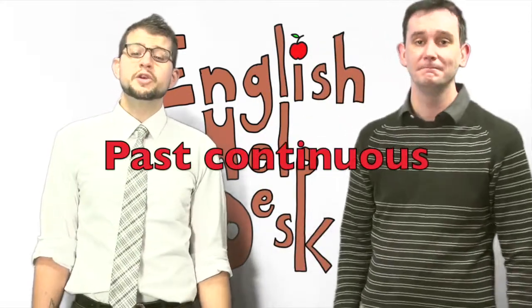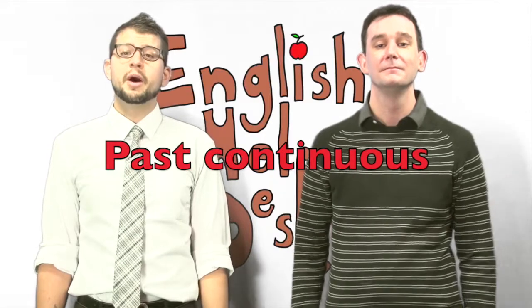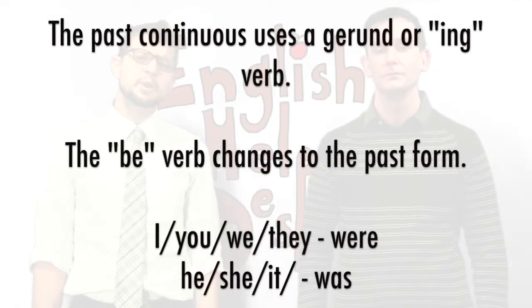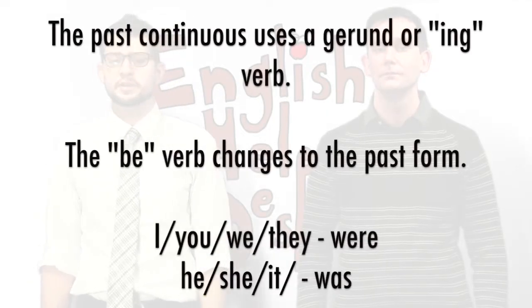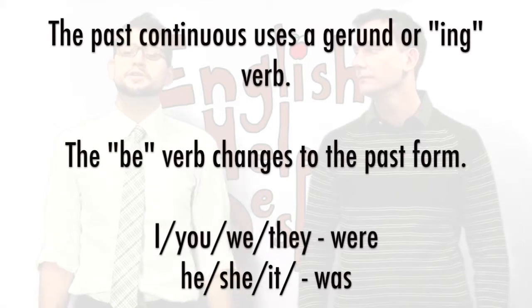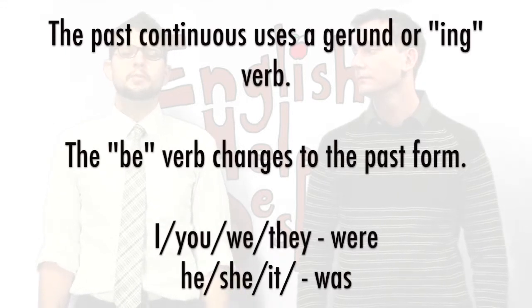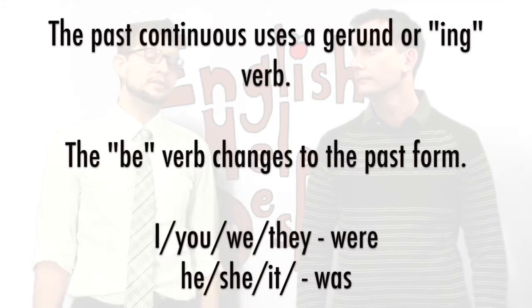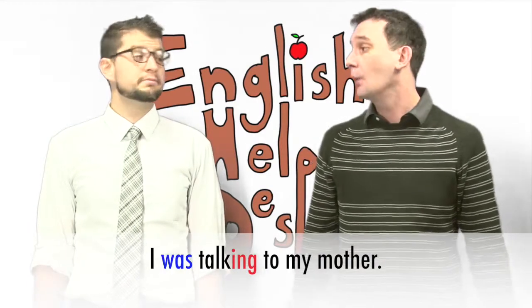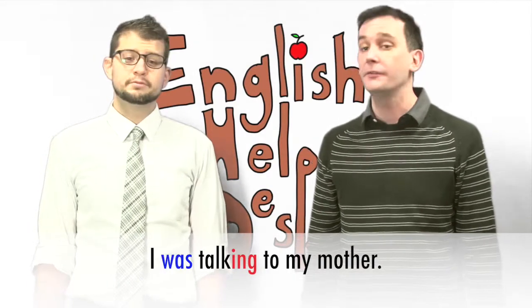To answer this question, we need to learn about the past continuous. The past continuous is similar to the present continuous in that it also uses a gerund or -ing verb. But instead of a present to-be verb, we use a past to-be verb. So I can say: I was talking to my mother.